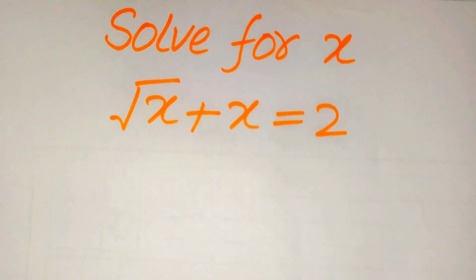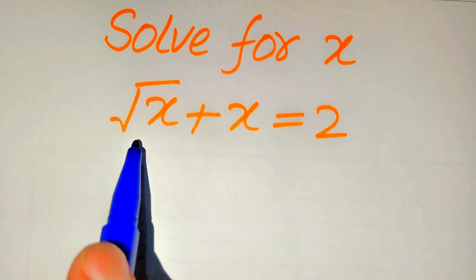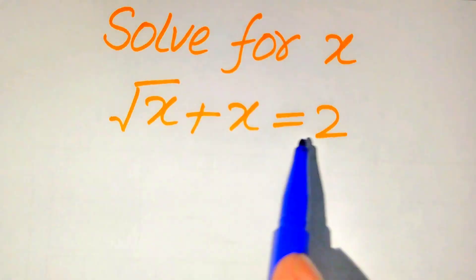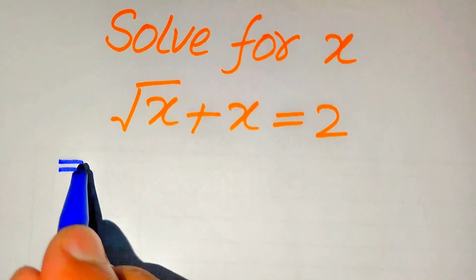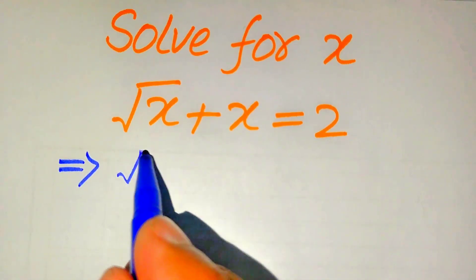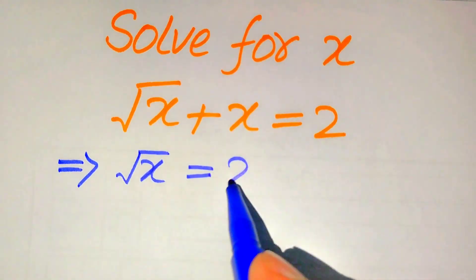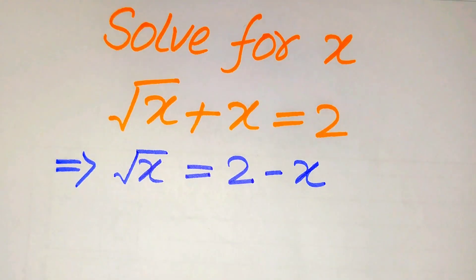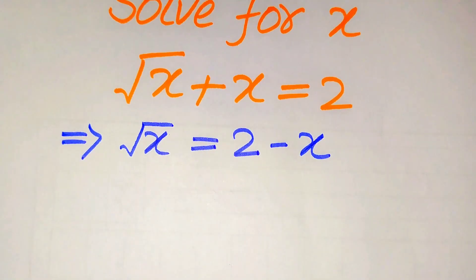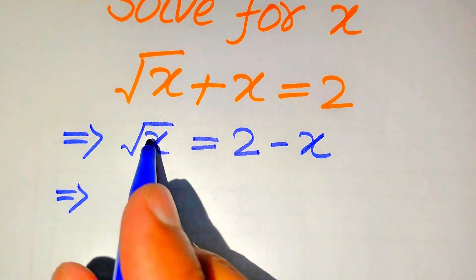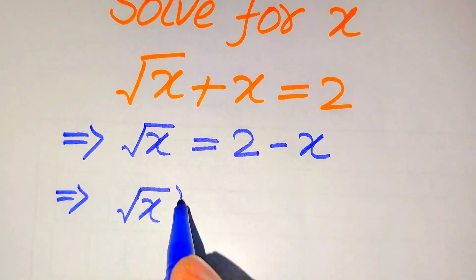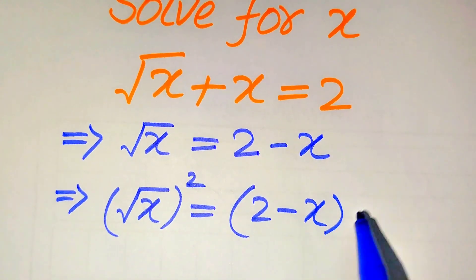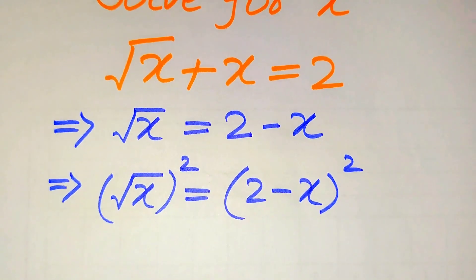The very first thing we are going to do is remove the square root sign. For this, we first move the plus x to the right hand side. After moving it, it is written as square root of x equals 2 minus x. In the next step, we take squares on both sides in order to eliminate the square root sign.